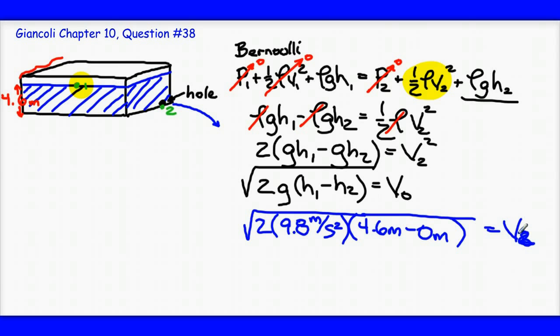When I run that through, I should be getting for problem number 38 about 9.5 meters per second. So, my answer then is 9.5 meters per second is equal to the velocity at 2. And this is the solution to question number 38 in chapter 10.